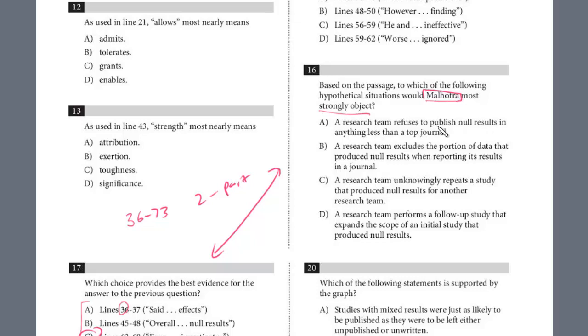A research study refuses to publish null results in anything less than a top journal. No. A research study excludes the portion of the data that proves the null result when reporting its results in a journal. This is exactly what was done. But they're just giving another situation, a team. So again, the team, even more troubling, they did not report the null data. They just kind of streamlined it so it would be misleading, and that one did yield the intended result. Alright, let's go on to number 18.